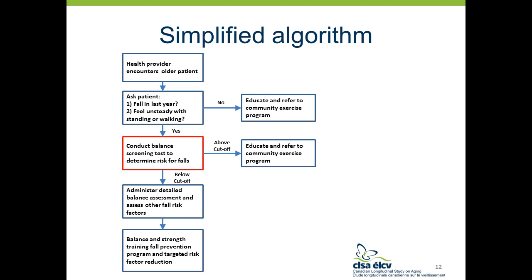We've drawn up a simplified algorithm summarizing all the different clinical practice guidelines as they relate to balance testing. Throughout this presentation, we use the term 'balance' to encompass both balance and mobility, as the commonality among suggested screening tools is that they include an assessment of balance. Essentially, in all clinical practice guidelines, a balance screening test is recommended for older patients who report a fall or feel unsteady with standing or walking. If balance is determined to be impaired, a more detailed fall risk assessment — possibly including a more comprehensive balance test to guide exercise training — is warranted. If balance is considered normal, education and referral to community resources is recommended.